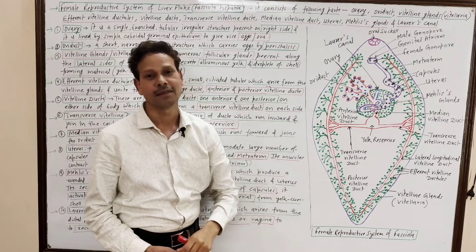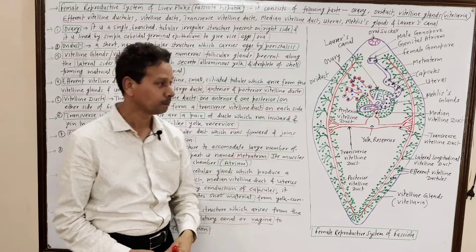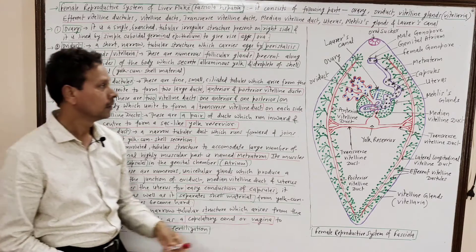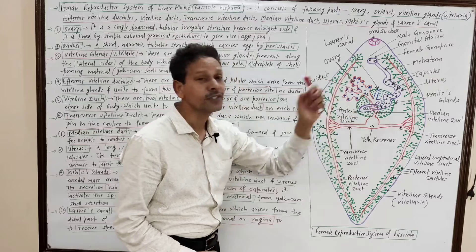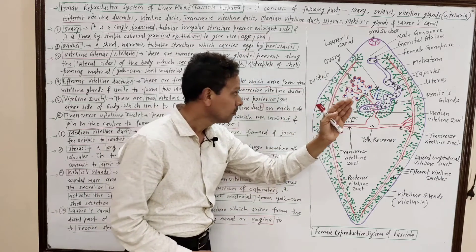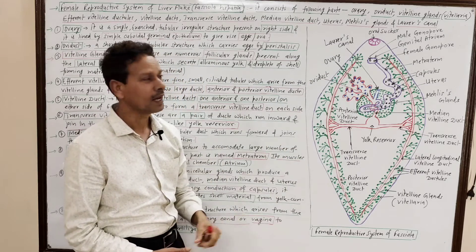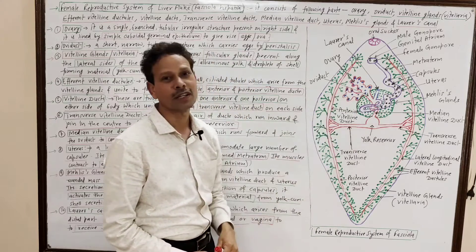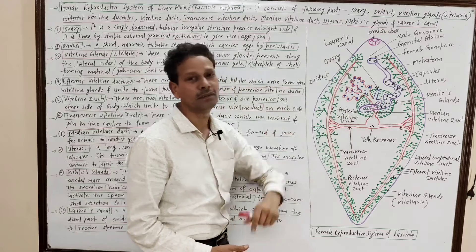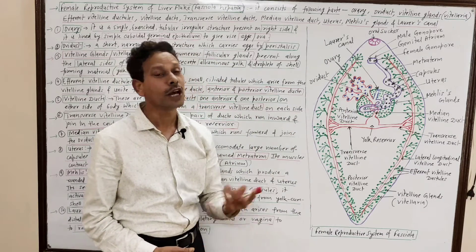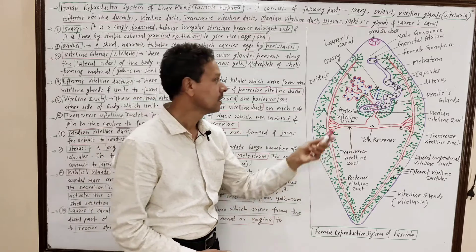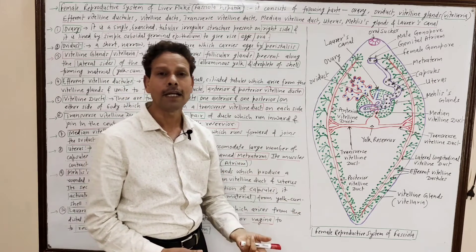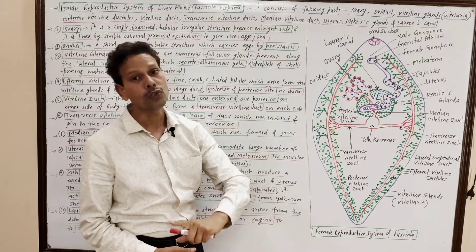Today we are discussing the female reproductive system. First of all, we will discuss the ovary. There is a single ovary, which is on the right side. This ovary is highly branched, irregular, tubular structure. The ovary is lined by simple cuboidal germinal epithelium. This germinal epithelium gives rise to female gametes — ova, eggs — by oogenesis.